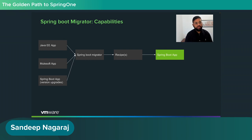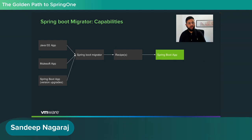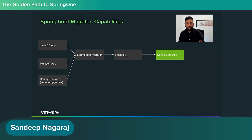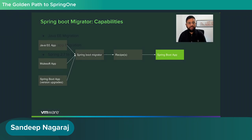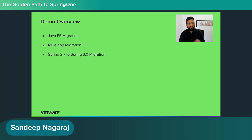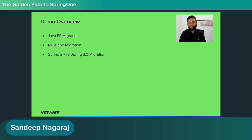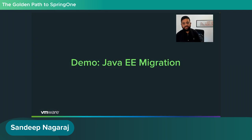What can Spring Boot Migrator do? Right now it takes in three kinds of projects for migration. One is Java Enterprise Applications — it can take a Java EE app and convert it into a Spring Boot app. It can also convert a MuleSoft app into a Spring Boot app. It can also do Spring Boot to Spring Boot, specifically version 2.7 to 3.0. Today I'd like to demo these three avenues.